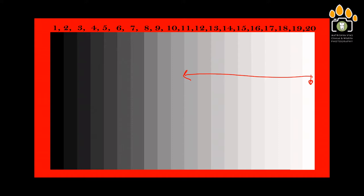Let us simplify it further with the help of this example. Here, I have 20 shades from black to white, and each shade represents one stop. So if I expose for tone number 20, then the camera will see up to shade number 11. Any shade falling between 1 to 10 will be captured as totally black. Similarly, if I expose for tone number 5, then it will record the details in tone number 10. All tones beyond that will be recorded as blown-out whites.